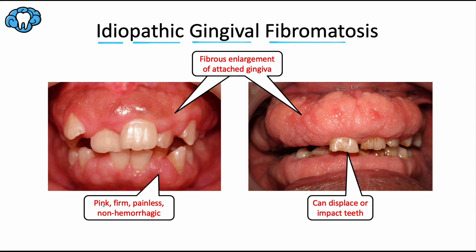The expanded gums are pink, firm, painless, and non-hemorrhagic. Although this gingival enlargement is benign and has no direct effect on the alveolar bone underneath, the excess tissue can make it easier for plaque to accumulate on the teeth, leading to possible gingivitis, periodontitis, and halitosis. The thickened tissue can also cause displacement of teeth, leading to diastemas, or could limit eruption of teeth, leading to impaction.